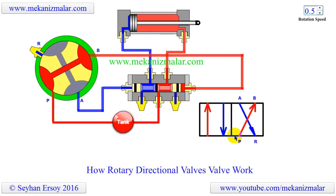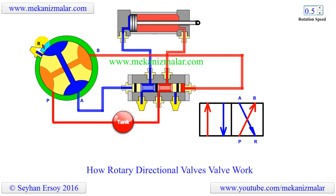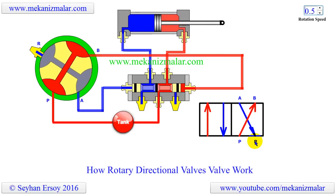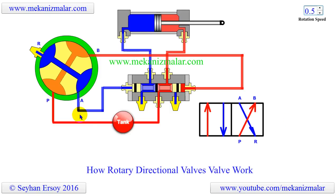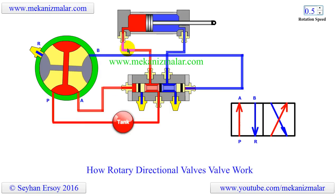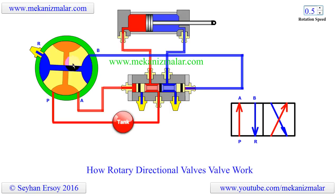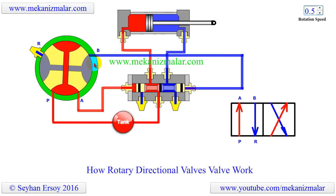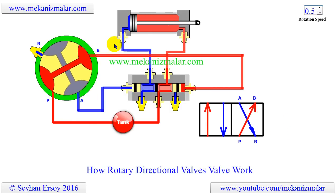Pressure port is labeled as P, while the exhaust port is labeled as R. A and B ports are connected to the pilot port of the 5-port 4-way air-to-air valve. By rotating the spool of the rotary valve, air can be sent to A and B ports of the rotary valve alternately to cause reciprocating motion.